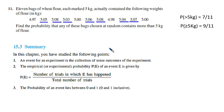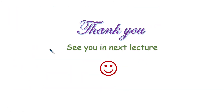We have now finished this chapter. Let us summarize. In this chapter you studied: an event of an experiment is a collection of some outcomes of the experiment. The empirical or experimental probability P(E) of any event is given by the formula shown. The probability of any event always lies between 0 and 1, inclusive — sometimes probability can be 0 and sometimes it is certain to happen, giving probability 1. This finishes the chapter on probability. Next lecture we will talk based on your appendix. Thank you, see you in the next lecture.